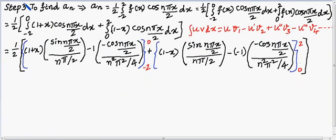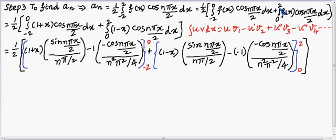Step 3 is to find aₙ. We know aₙ = (1/2) ∫₋₂² f(x) cos(nπx/2) dx. Since f(x) is defined on two intervals, this becomes: aₙ = (1/2)[∫₋₂⁰ f(x) cos(nπx/2) dx + ∫₀² f(x) cos(nπx/2) dx].